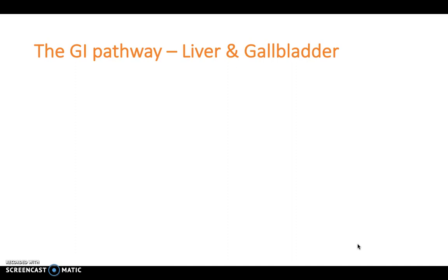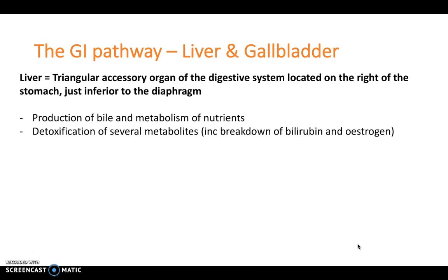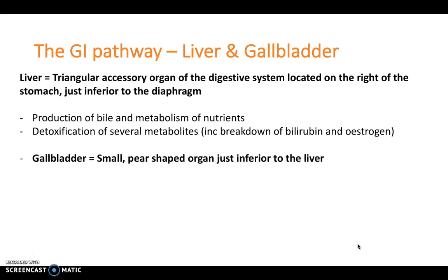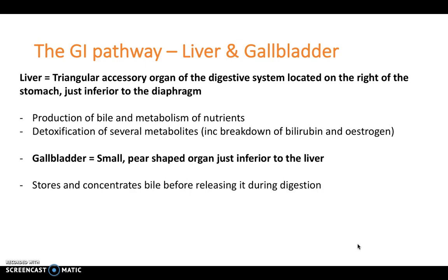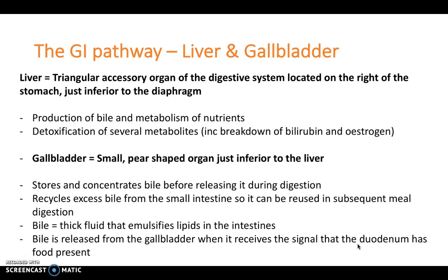After the stomach we move to the duodenum, but don't forget the accessory organs: the liver, gallbladder and pancreas. The liver is a triangular accessory organ located on the right side in the right hypochondrium, inferior to the diaphragm. It produces bile, metabolizes nutrients, and detoxifies metabolites such as alcohol, bilirubin and estrogen. The gallbladder is a small pear-shaped organ just inferior to the liver that stores and concentrates bile, releasing it via the cystic duct, common hepatic duct and common bile duct into the duodenum when chyme is present.